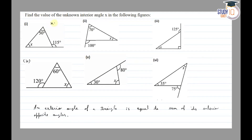In the first figure, applying the theorem: x plus 50 is equal to 115 degrees. So x is equal to 115 minus 50, which gives x equal to 65 degrees.